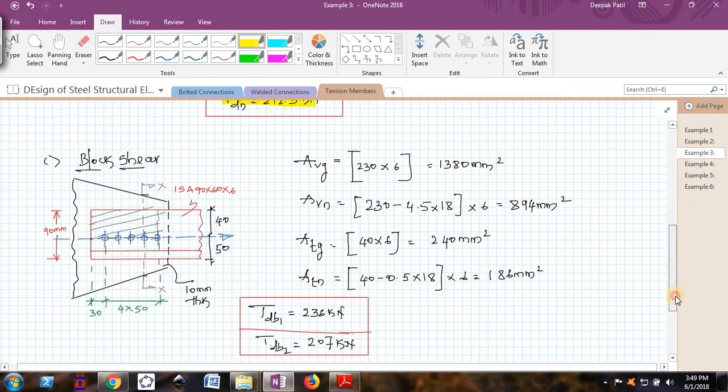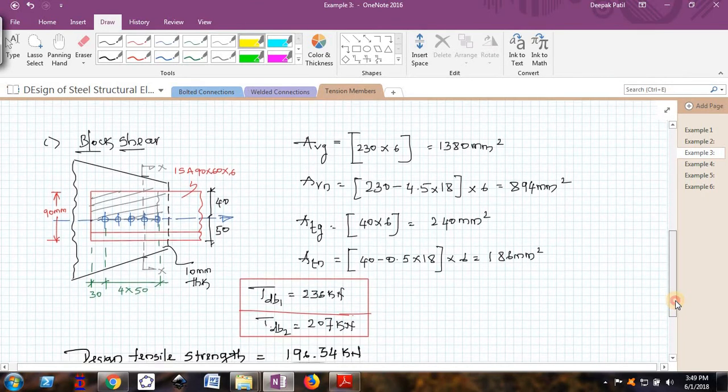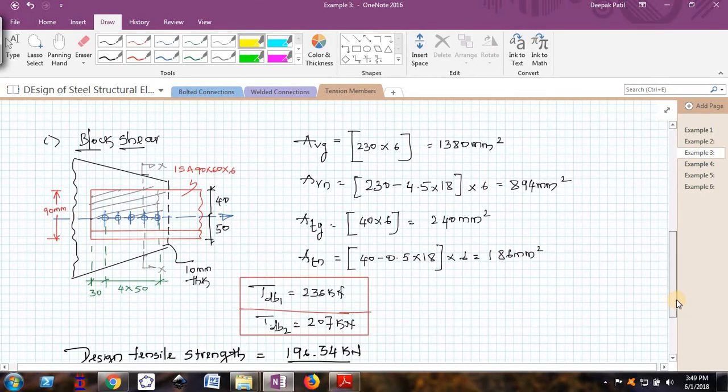Now if I come to the block shear, here I have not written the exact formula for the block shear because by this time you should be very comfortable in writing those formulas by looking into the IS 800. I am just calculating the AVG, AVN, ATG and ATN. We will quickly find out AVG. AVG will be same as in the previous example and AVN will also be same. Whether you connect the outstanding 60 mm leg or 90 mm leg, it will be same.